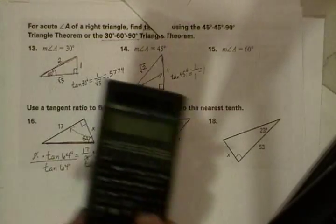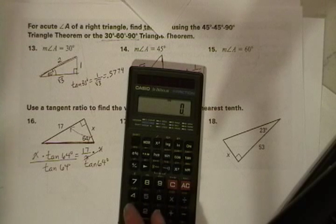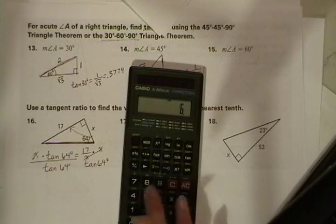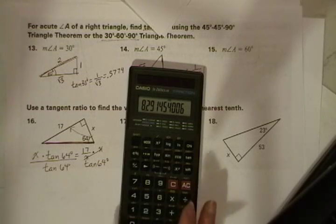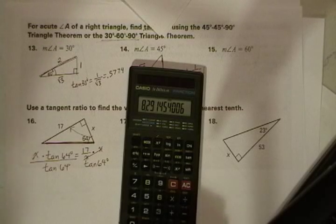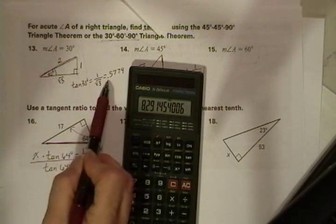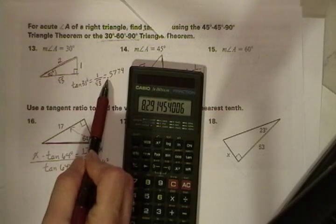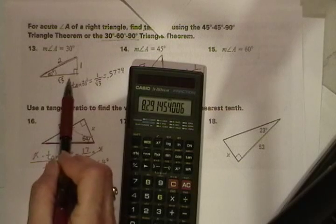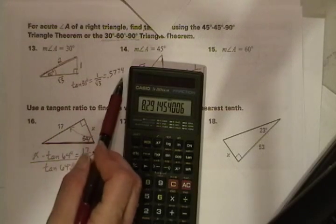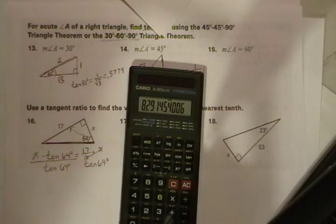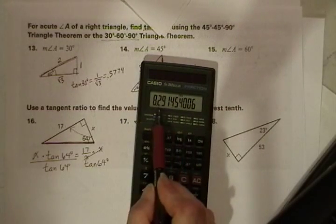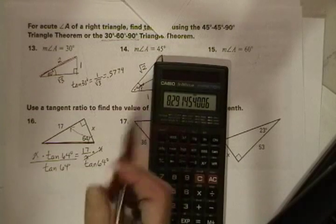To key this into the calculator, on a Casio, it looks like this: 17 divided by 64 tangent. Now that's tangent of 64, so we have to press equals. 8.29. Now this is the side that we're looking for. We're not looking for a ratio like we were up here. That takes four digits because the ratios are very close together for each of these degrees. But when we're dealing with sides, going to the tenths place is good enough. So we're going to round it at the tenths place and we get 8.3. So x = 8.3.